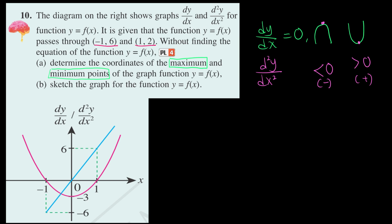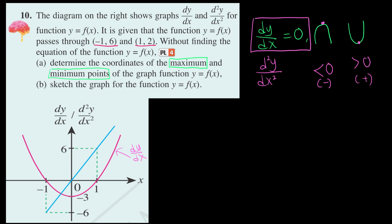This is how we approach the problem. Looking at this graph, it is composed of two curves. dy over dx is represented by the pink curve. Looking at the pink curve, where do we have the value of 0? At x equals negative 1 and x equals 1 — those are the roots. So we know the turning points are at x equals negative 1 and x equals 1, because when dy over dx equals 0, those are the turning points.